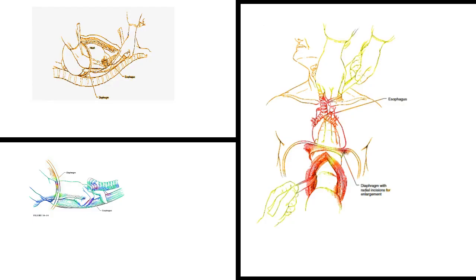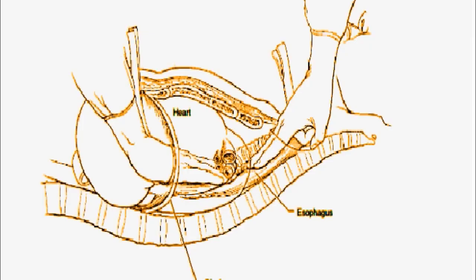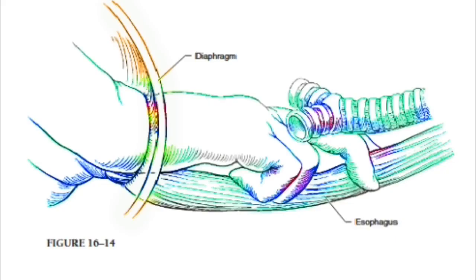The lateral tissue is then stripped from the esophagus by blunt dissection. Figures 16-12 to 16-14.